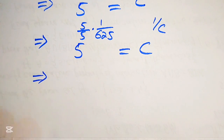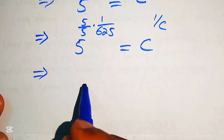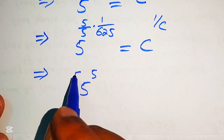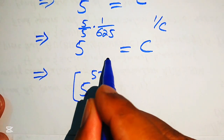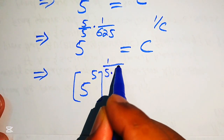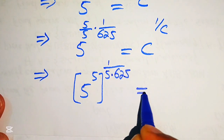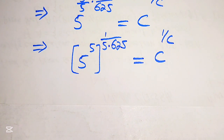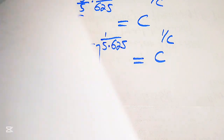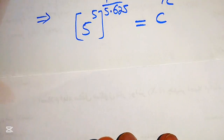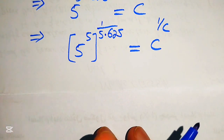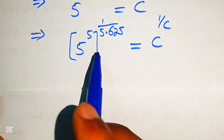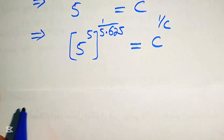We move this factor of 5 inside the term, writing it as 5 to the power of 5, with the whole thing raised to the power of 1 over 5 times 625, and this equals c to the power of 1 over c. Now we need to simplify: we have 5 to the power of 5, and 5 multiplied by 625.